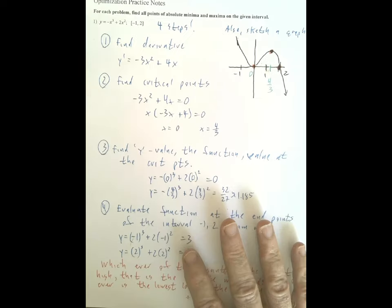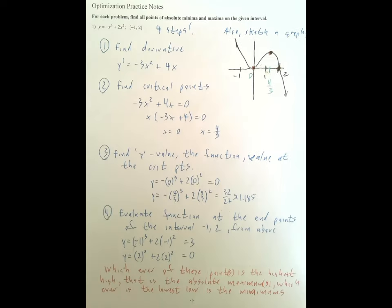There we go on the math, so there it is. In this problem here is the work you're going to do. Remember we did this last week, optimization practice notes. We're doing this problem, finding all points of absolute minima and absolute maxima on the given interval. There is the function you've got: -x³ + 2x² over the interval -1 to 2.